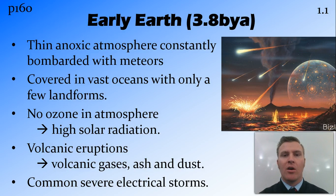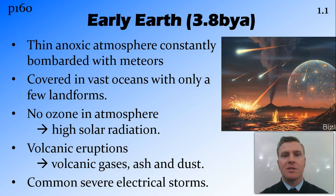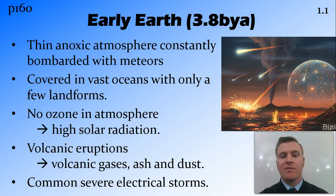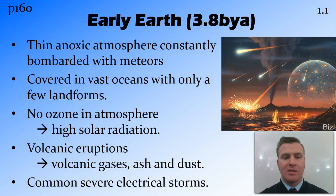Looking at the early Earth, it was covered in vast oceans with not very many landforms. The tectonic plates were still very new, so we didn't have the deep trenches in the oceans or the high mountains. We had mainly volcanic islands popping out over the ocean of reasonably uniform depth. These volcanic eruptions spewed masses of gases, volcanic gases, as well as ash, dust, soot and water vapour into the atmosphere.